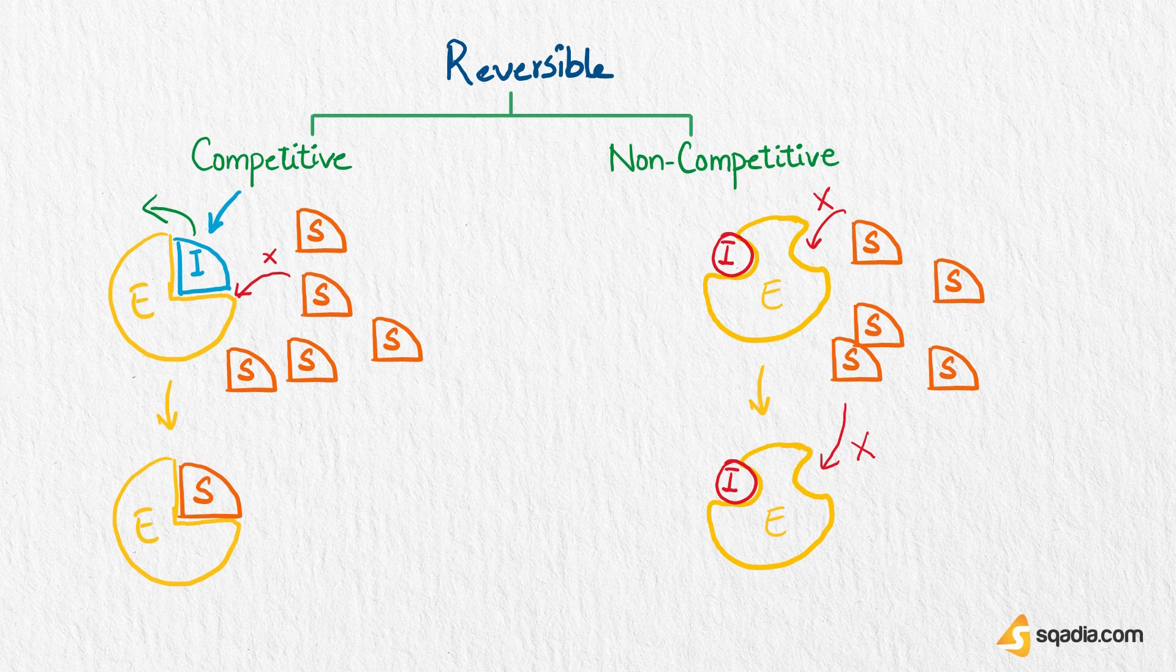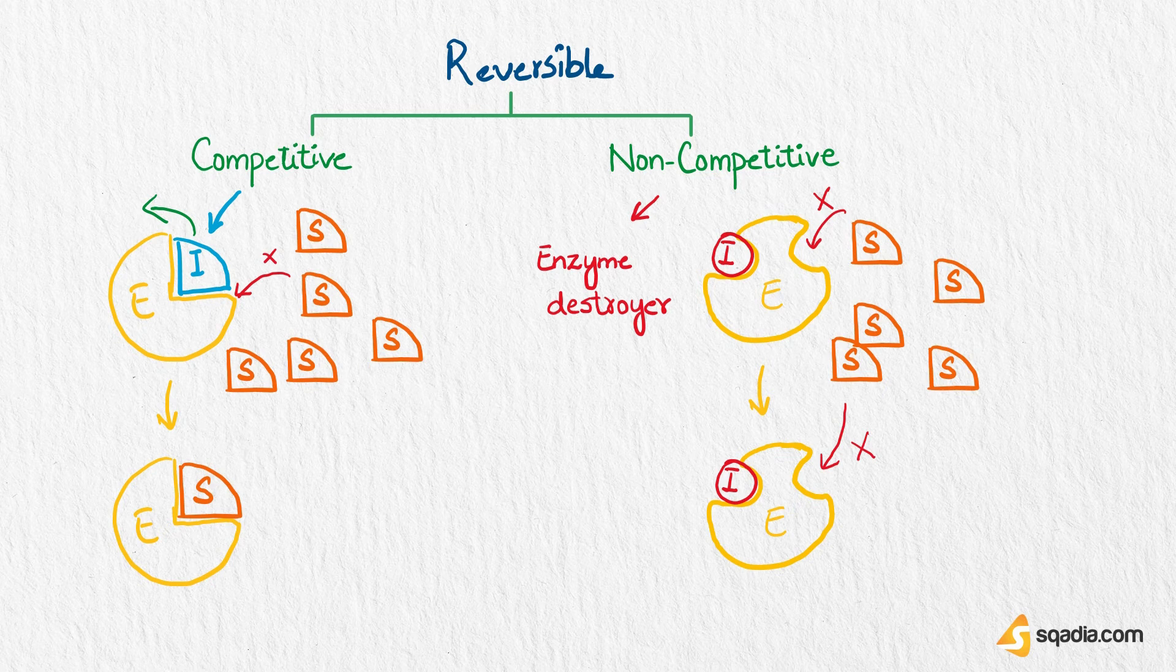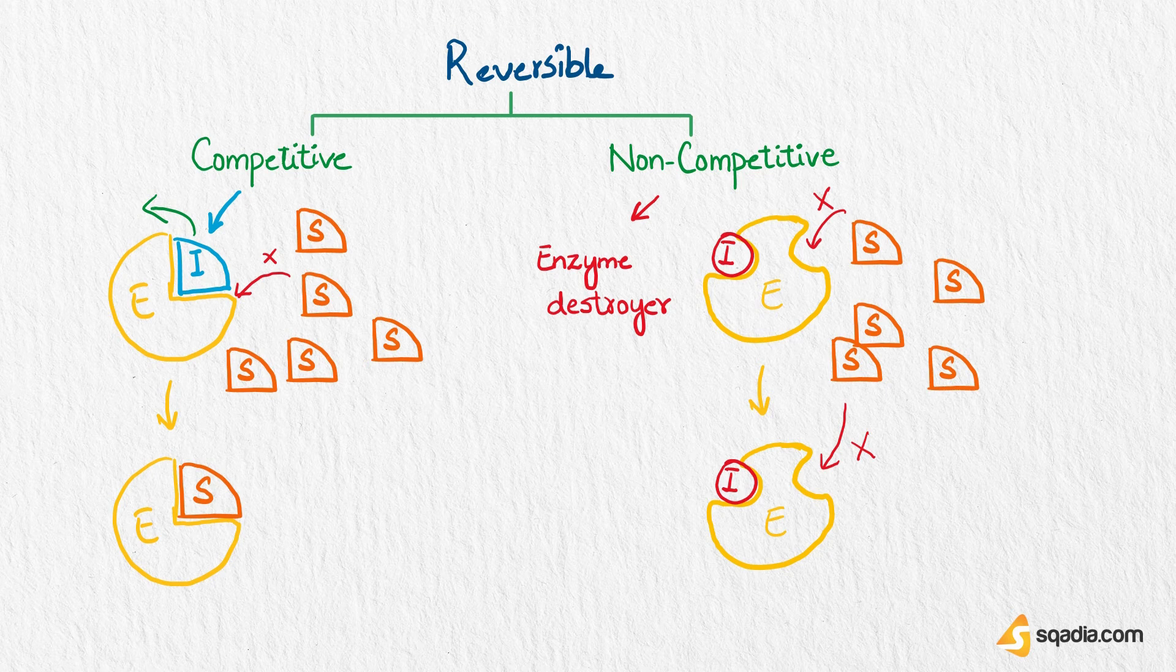Essentially, the enzyme has now been changed into a form that does not bind to the substrate anymore. It's as if the enzyme is not there at all. You can think of non-competitive inhibitors as enzyme destroyers, as its effect renders the enzyme useless for its given purpose.